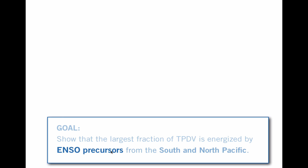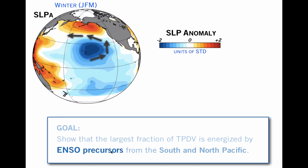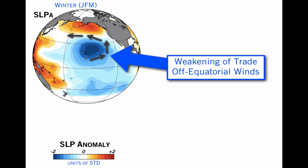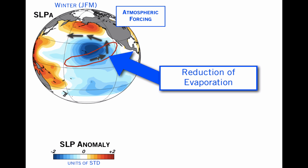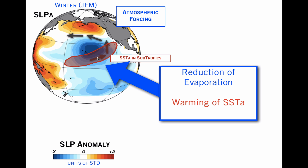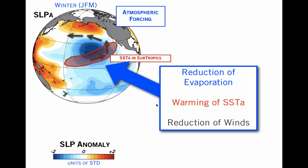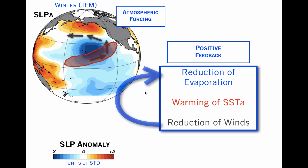So what are these ENSO precursors? This is a spatial pattern of anomaly in the sea level pressure in the winter, in JFM — January, February, March. When you have patterns of anomalies like this, often you have a weakening of the trade winds. In this case, this is a North Pacific Oscillation pattern. This weakening of the off-equatorial trade winds essentially reduces the evaporation. By reduction of the evaporation, you have a warming of the SST in this location. Once you warm the SST, the warming further reduces the winds, and the reduction of the winds feeds back into further reduction of the evaporation, creating a positive feedback.